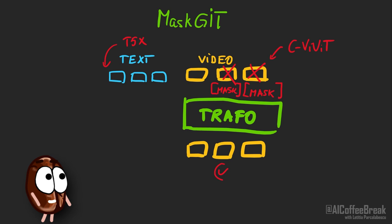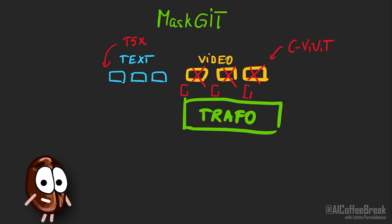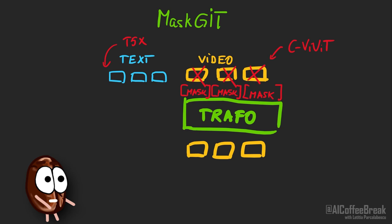To produce video from text during inference, the model takes in the text embeddings and just mask tokens instead of video tokens, since no video is produced yet. In a first step, it unmasks all video tokens. The CViViT decoder can then take the produced video tokens and decode them back to frames.